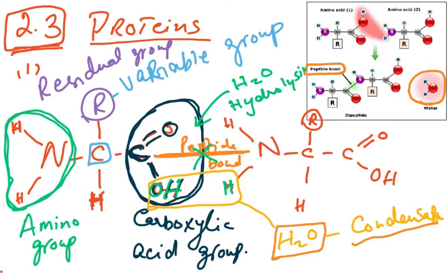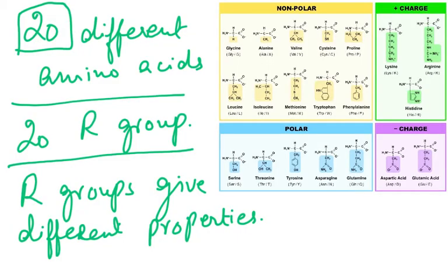So the formation and breakage of a peptide bond covers the first syllabus point. You must know the general structure of an amino acid, draw it in your copies, show where the peptide bond is formed, and know that we have 20 different amino acids.